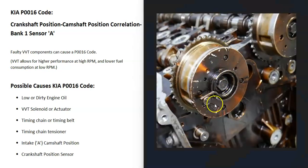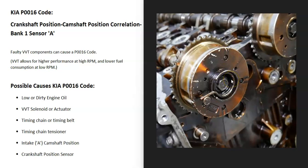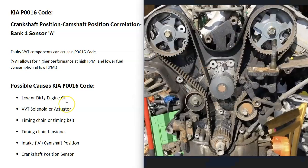These solenoids also work with what's called an actuator or sprocket — this is what the timing chain or timing belt rides on. These usually don't go bad as commonly as those solenoids do, but they are part of the variable valve timing, so keep them in mind. If they do go bad, they can cause this code. Another thing that could cause this is a bad timing belt or timing chain — basically if it slips and knocks off the timing, it's going to cause problems.